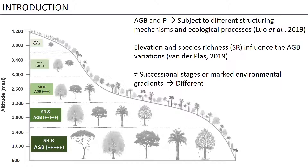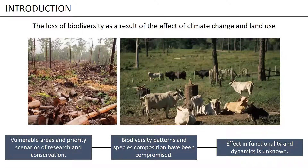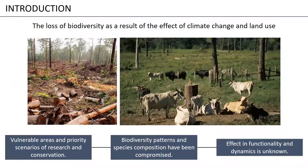Associated with a loss of biodiversity as a combined effect of climate change and different land use practices like logging and cattle, this has made the tropical mountain Andean forest a vulnerable area and priority scenario for research and conservation. Here, the biodiversity patterns and species composition have been compromised, and how all these changes are affecting the functionality and dynamics of this ecosystem is unclear.